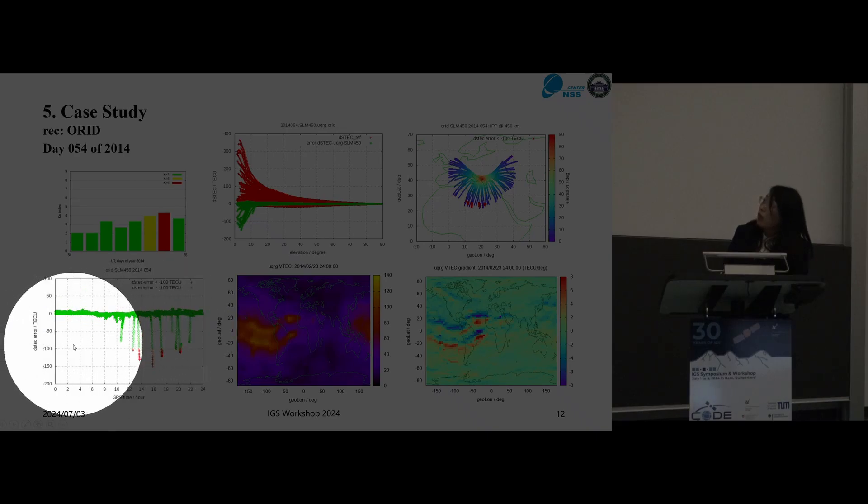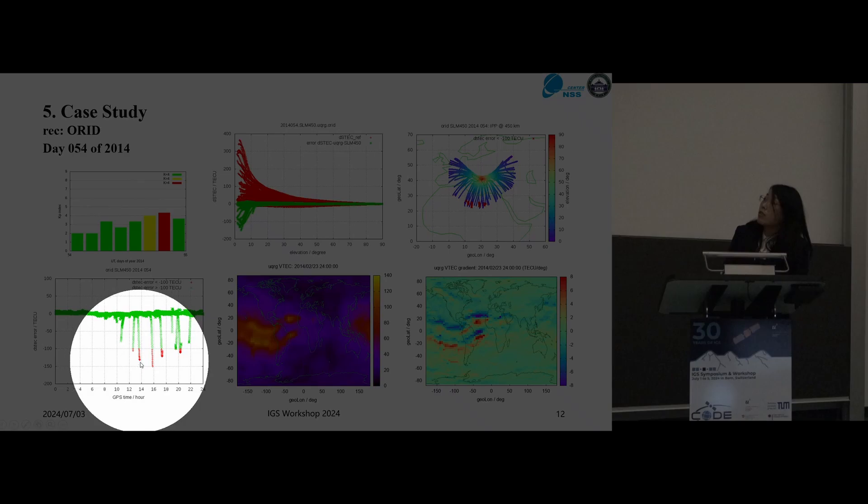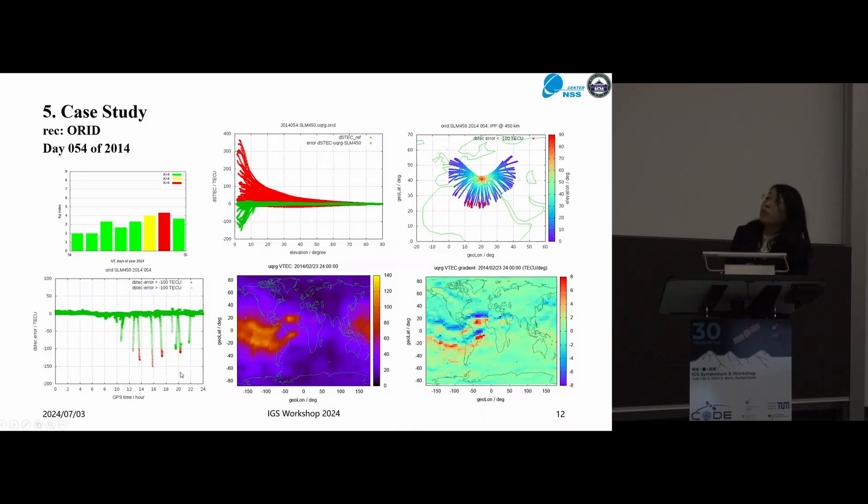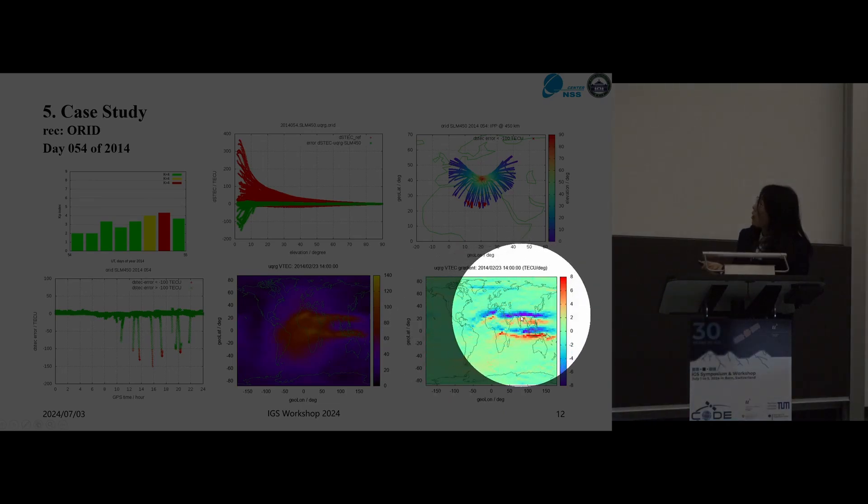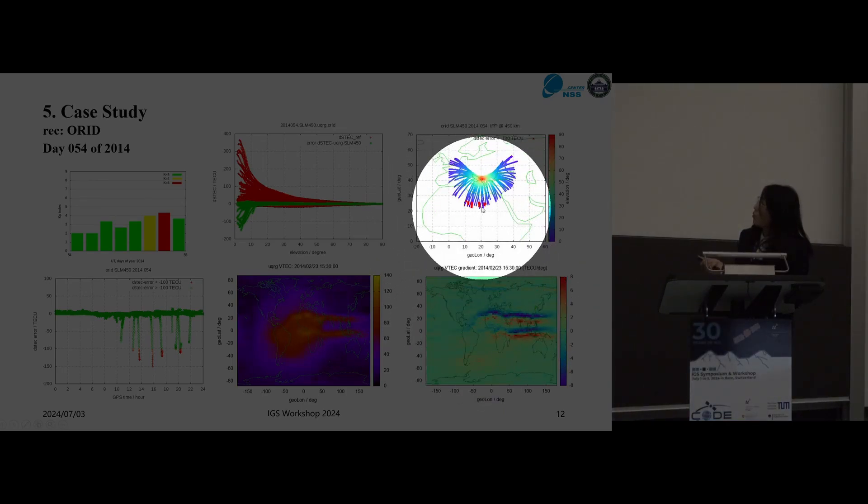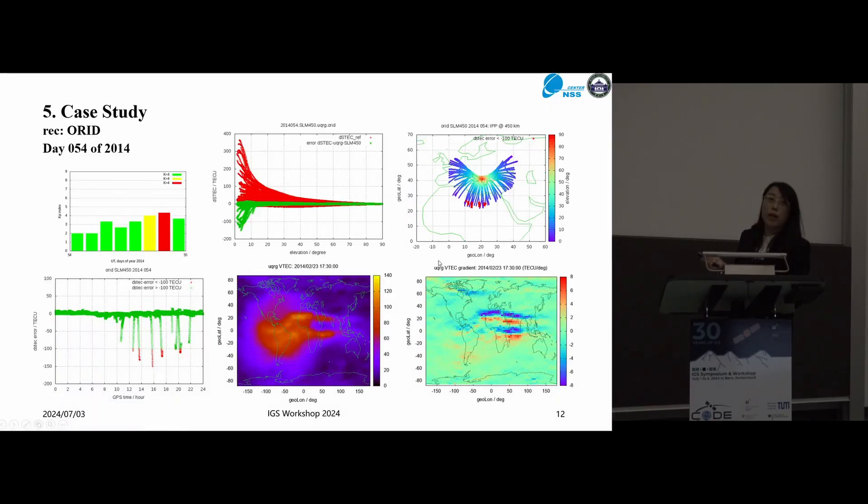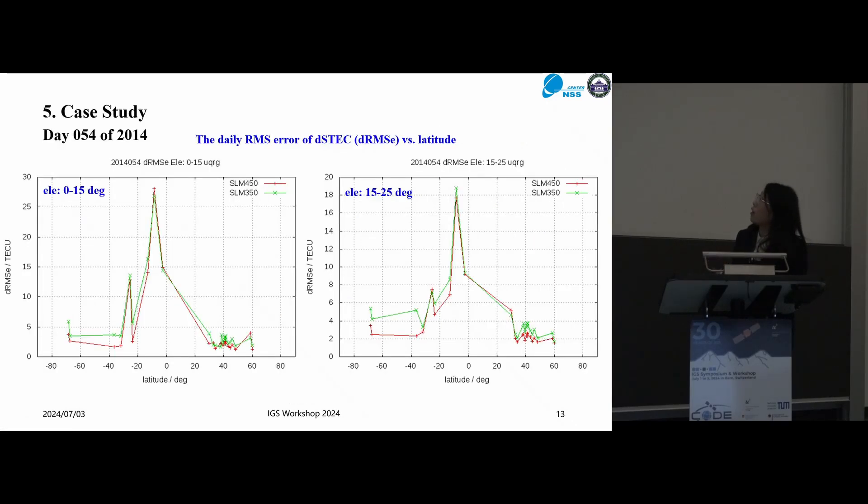From this plot, the DSTEC error versus the GPS time, we can see these large errors happening in the afternoon of the GPS time. From the VTEC and VTEC gradient animation, we wait for the afternoon. We can confirm that the large horizontal gradients explain the large ionospheric mapping function errors here. Yeah, now the large gradient happens, corresponding to the southward satellites.